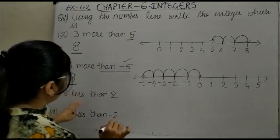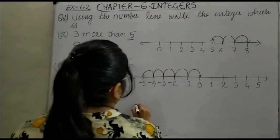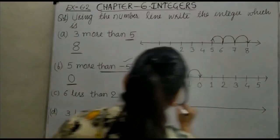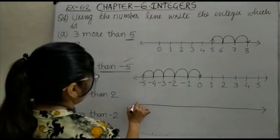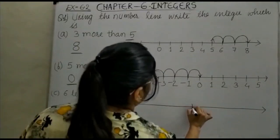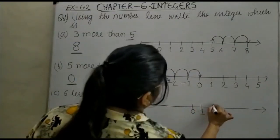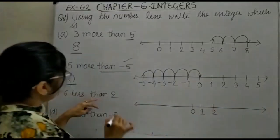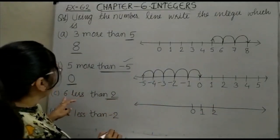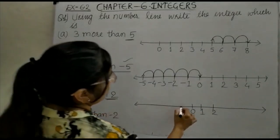Now, 6 less than 2. Again we will draw the number line. This is your 0. We start from 2. Less means you have to move to the left-hand side, by 6.